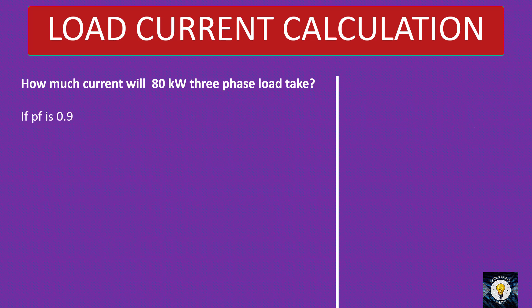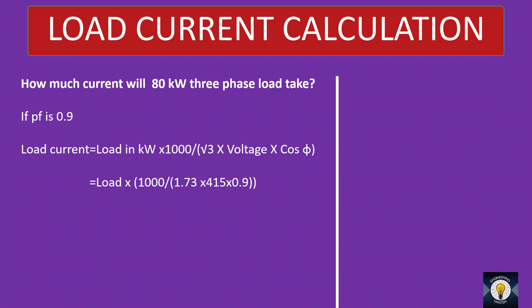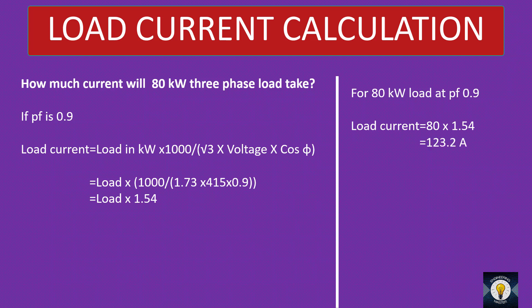If your power factor is 0.9, what will be the multiplier? The equation is load current equals load in kW into 1000 divided by root 3 into voltage into cos φ. Substituting: load into 1000 divided by 1.73 into 415 into 0.9 — the value will be load into 1.54. So if your power factor is 0.9 and line voltage is 415 V, remember the multiplier 1.54. Just multiply the load by 1.54 to get the load current.